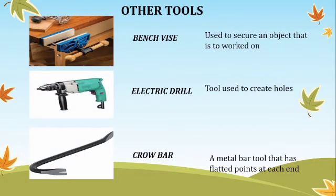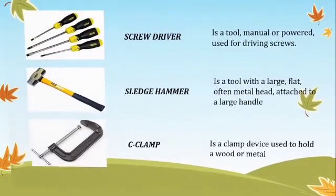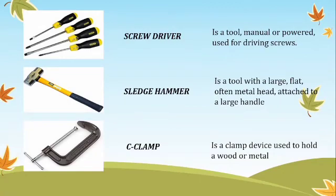Other tools used for construction or carpentry. Bench vise — used to secure an object that is being worked on. Next is electric drill — a tool used to create holes. Crow bar — a metal bar tool that has flattened points at each end. Next is screwdriver — a tool, manual or powered, used for driving screws.